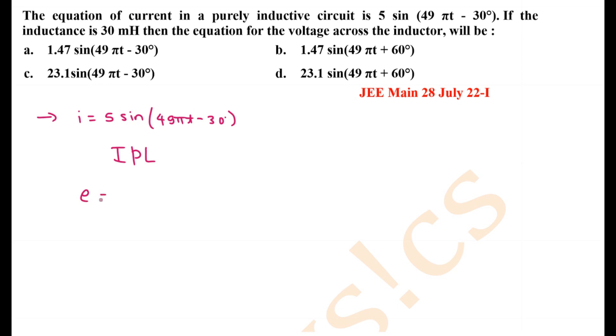So we can write for the equation of EMF across the inductor: E equals E0 sin of angle 49 pi t minus 30, and as potential is leading, it will be plus 90.